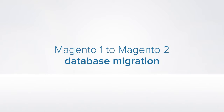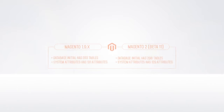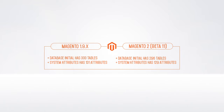Magento 2 is out and its database has changed quite a bit compared to Magento 1. For instance, Magento 1.9 has 333 tables in its database, while Magento 2 has only 296. Magento 1.9 has 131 system attributes, while Magento 2 has only 129. Some table and attribute names have also changed.